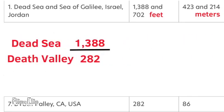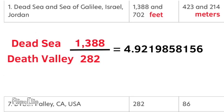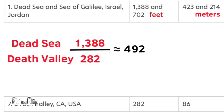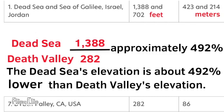1,388 divided by 282 equals a long decimal, which is approximately 492%. This tells me that the Dead Sea's elevation is about 492% lower than Death Valley's elevation.